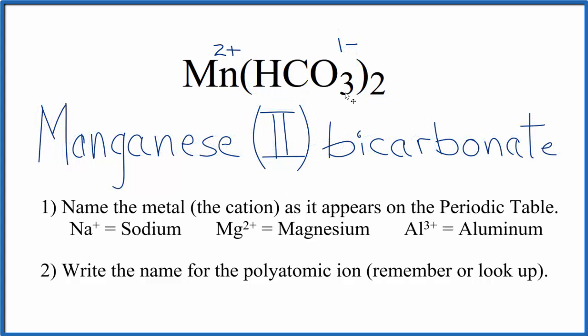So the name for Mn(HCO₃)₂ is manganese(II) bicarbonate. You could also call it manganese(II) hydrogen carbonate. The Roman numeral II is because we have a 2+ charge on the manganese. This is Dr. B, and thanks for watching.